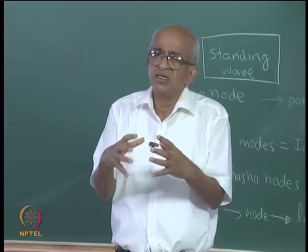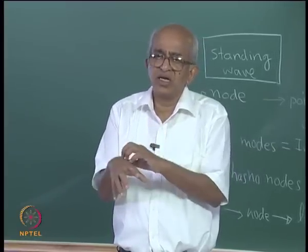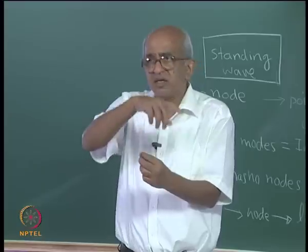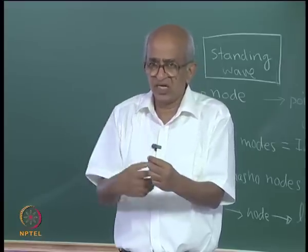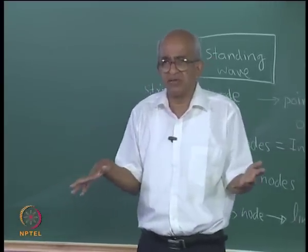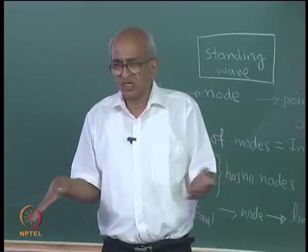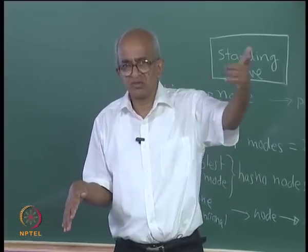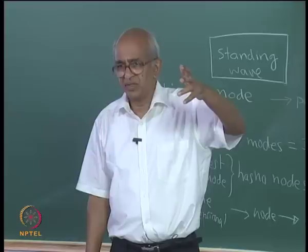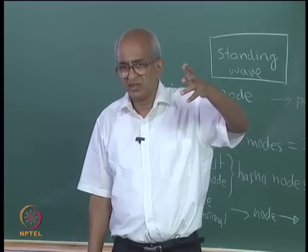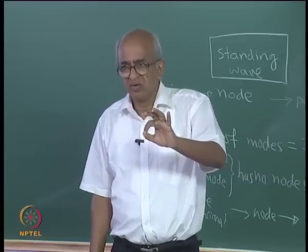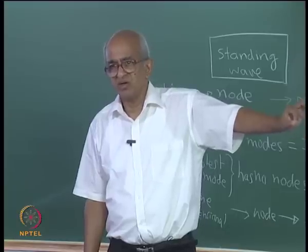If the wave is confined, the electron can form standing wave patterns. The simplest possible standing wave pattern would have no nodes. The next would have one node, then two, three, four, etc. You can form an infinite number of such standing wave patterns.